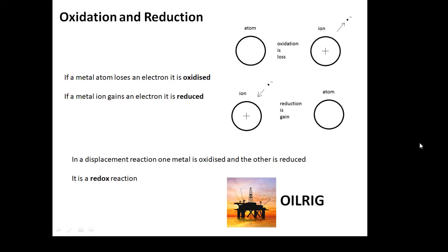There's one way of remembering this: the very useful OIL RIG. Oxidation is loss, reduction is gain - OIL RIG. In a displacement reaction, one metal is oxidised and the other is reduced. For example, in our iron and copper sulphate, our iron atoms are oxidised and our copper ions are reduced. This is an example of a redox reaction, because you get reduction and oxidation happening.